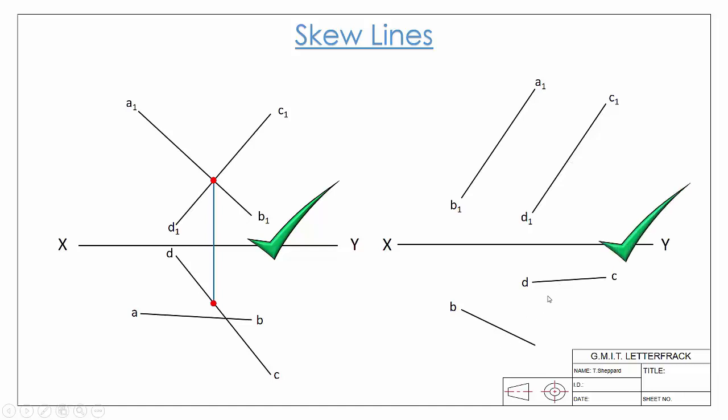So they're not parallel lines. A skew line is neither intersecting nor parallel.